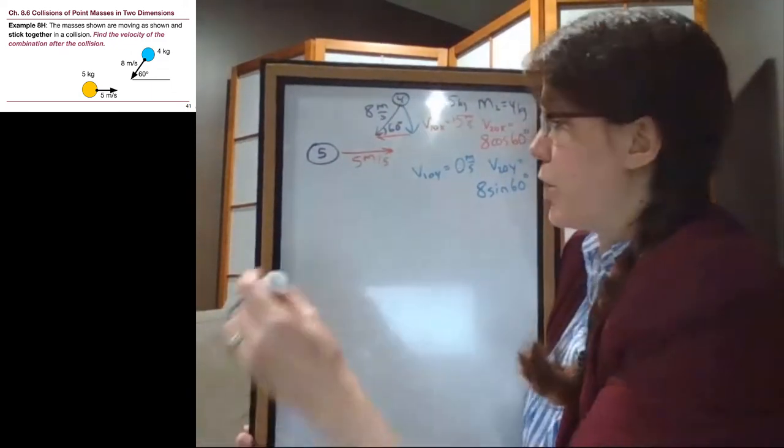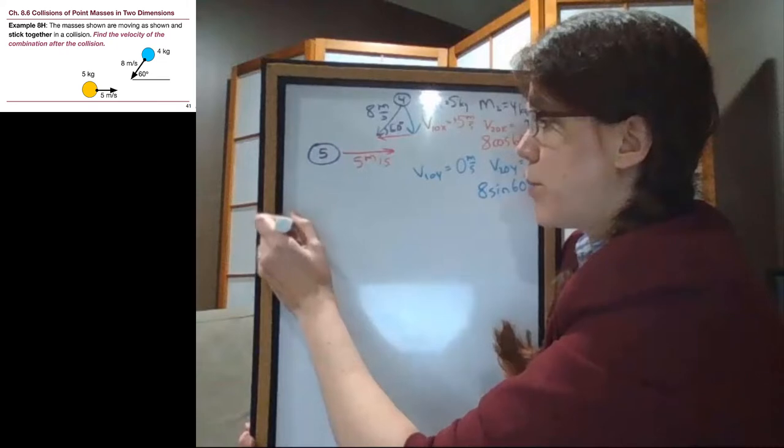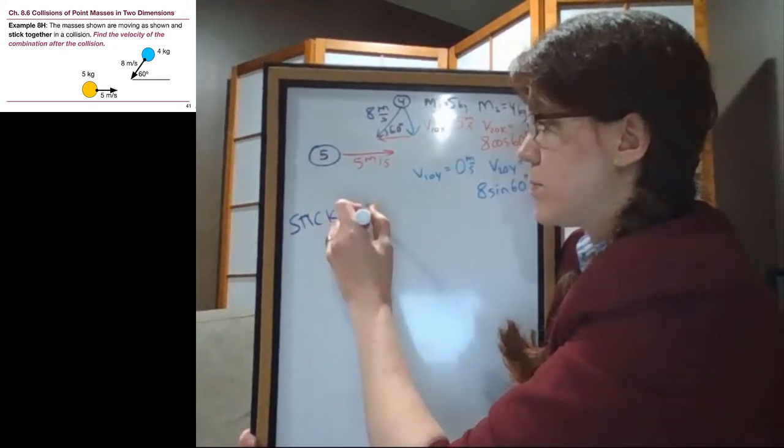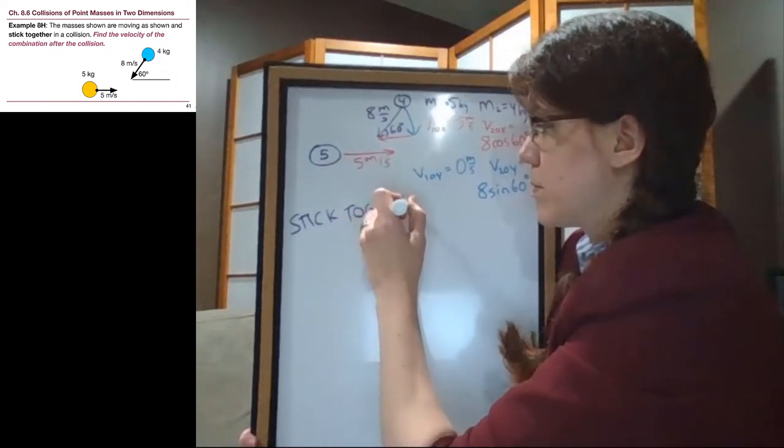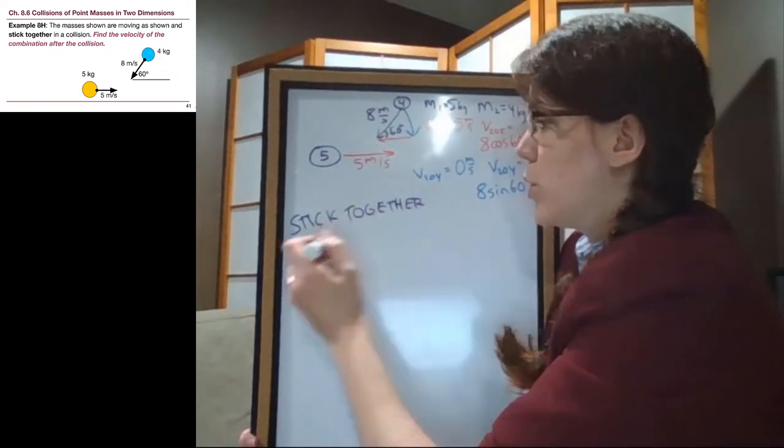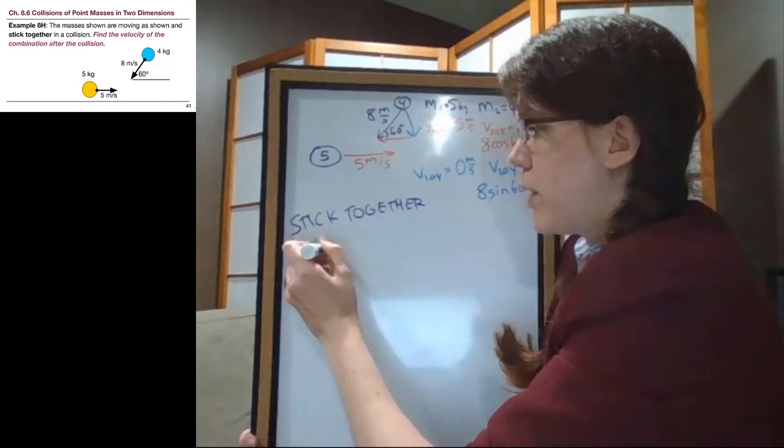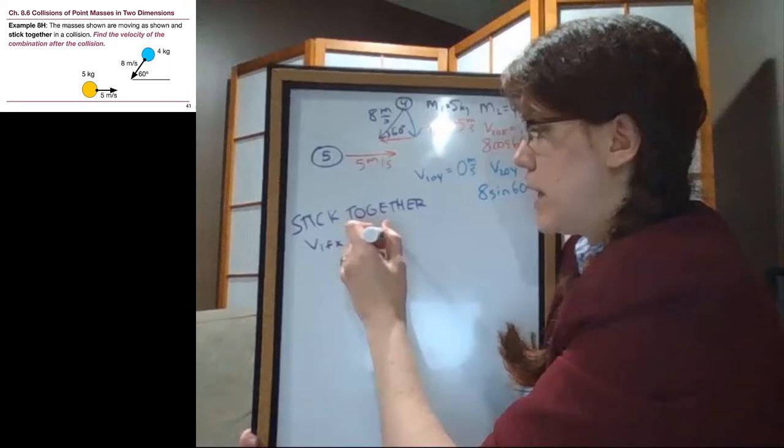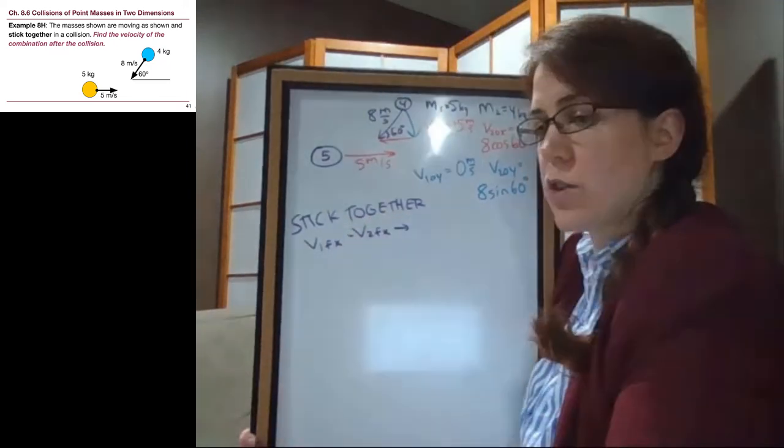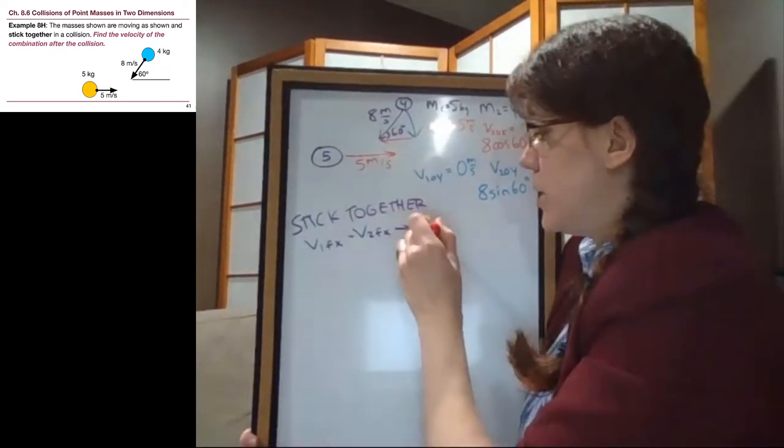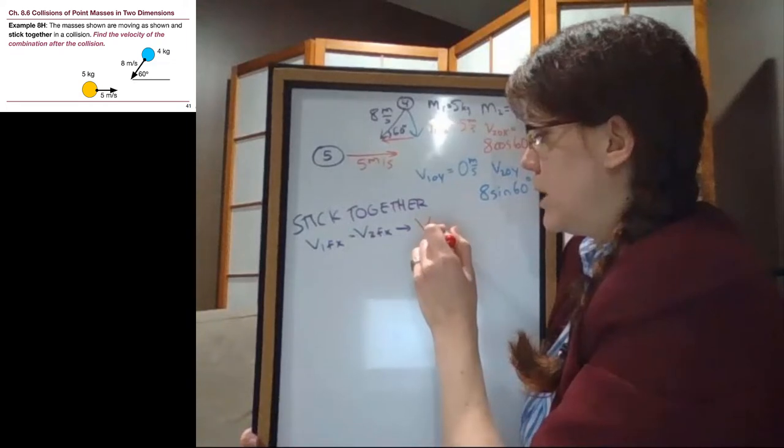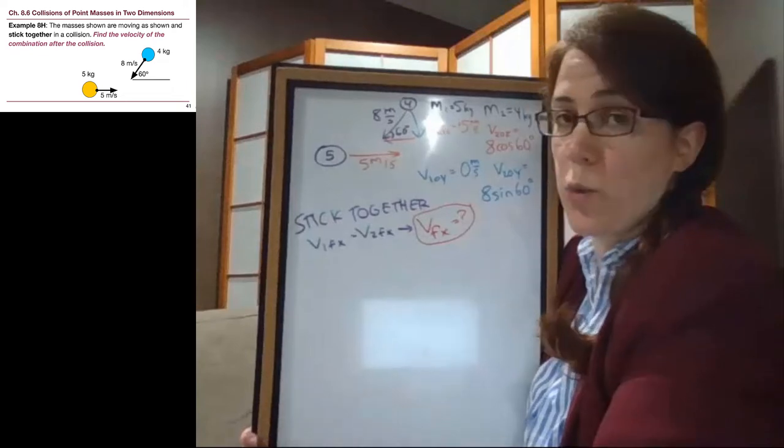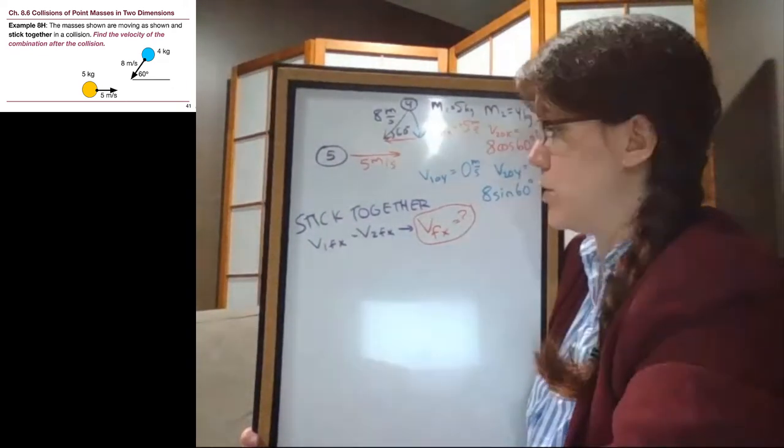Now, the key thing here is that, unlike the previous example, these stick together, which means that v1 final in the x direction is equal to v2 final in the x direction. And so v1 final in the x direction is one of our unknowns, and so we'll use the x equation for momentum conservation for that.